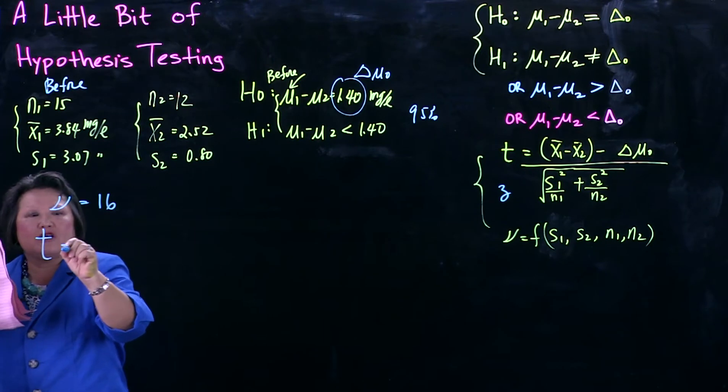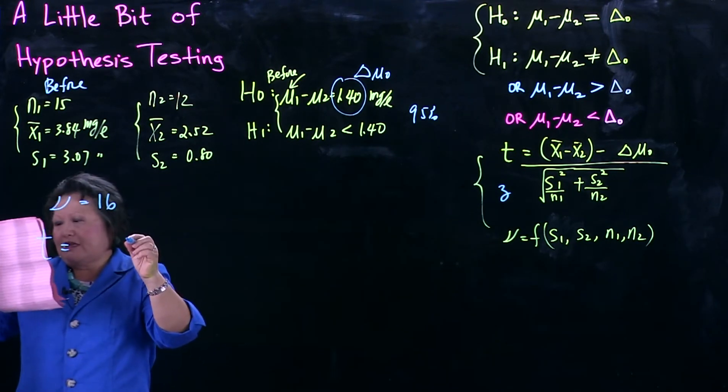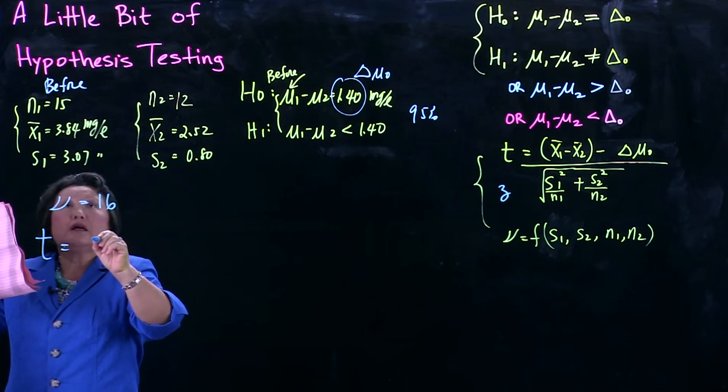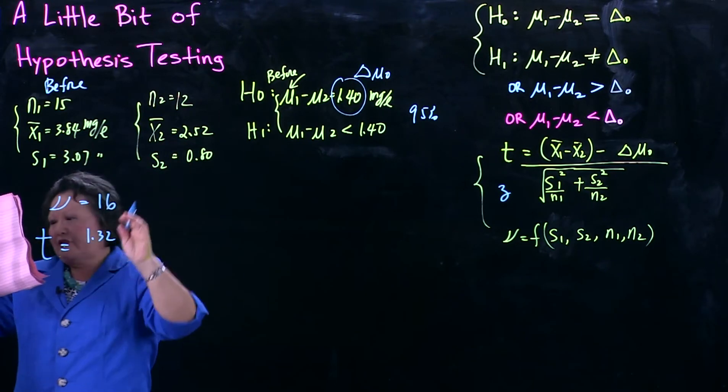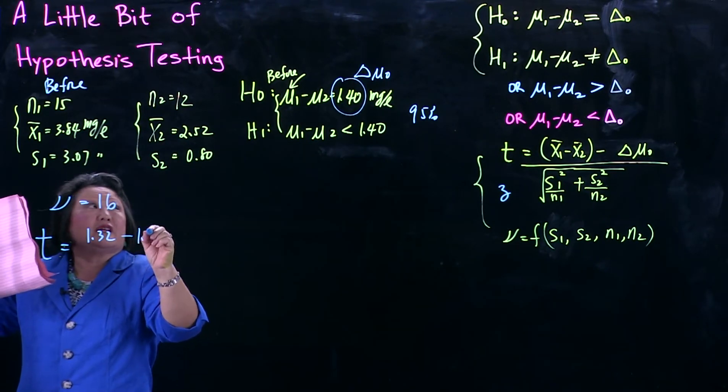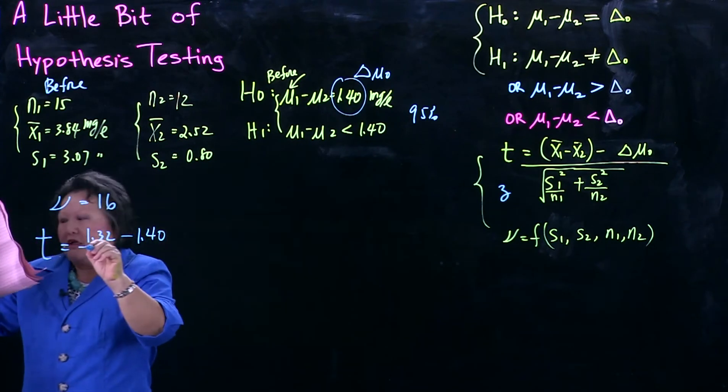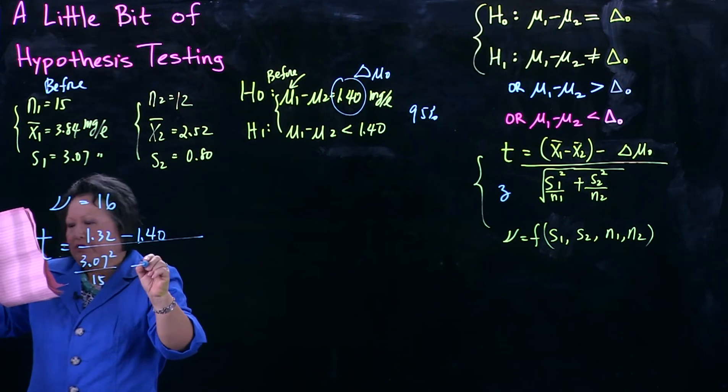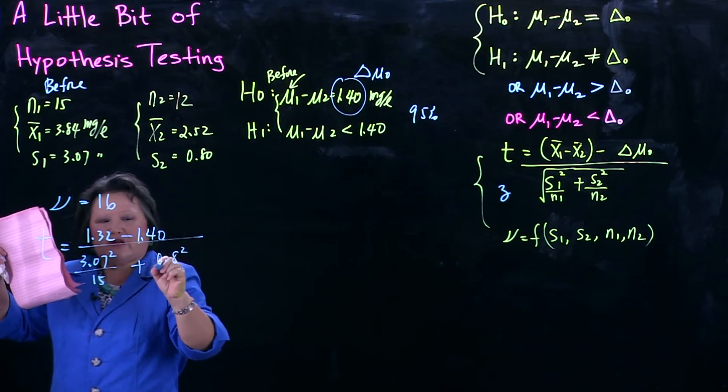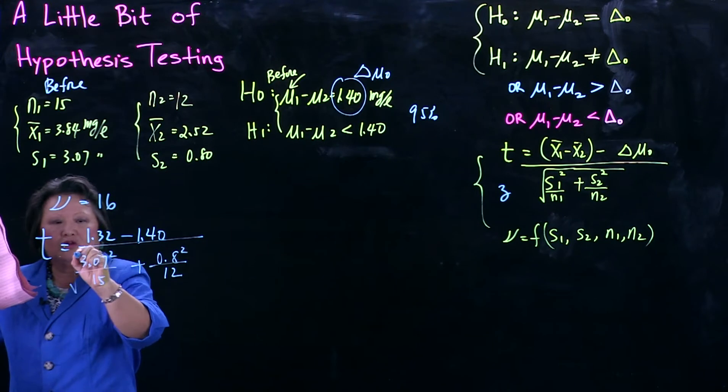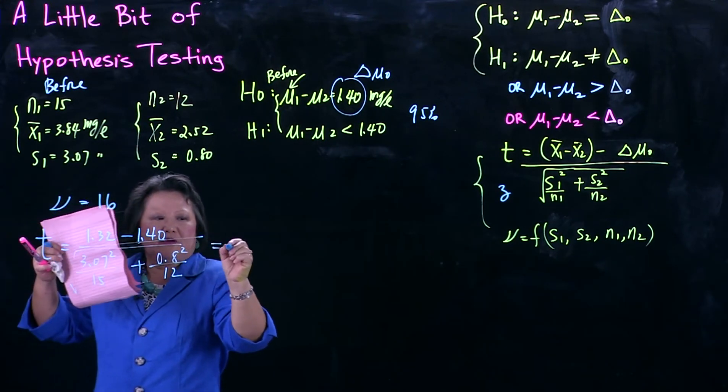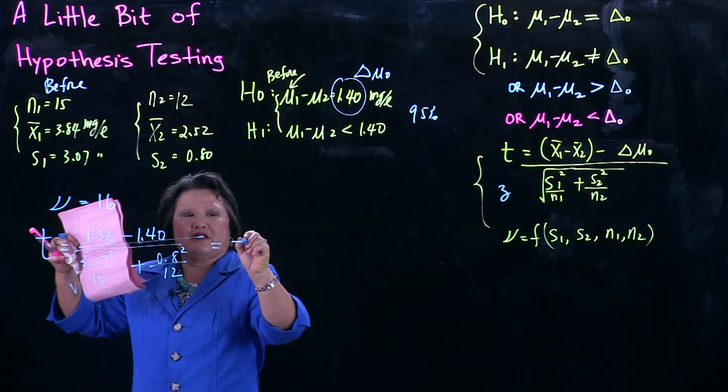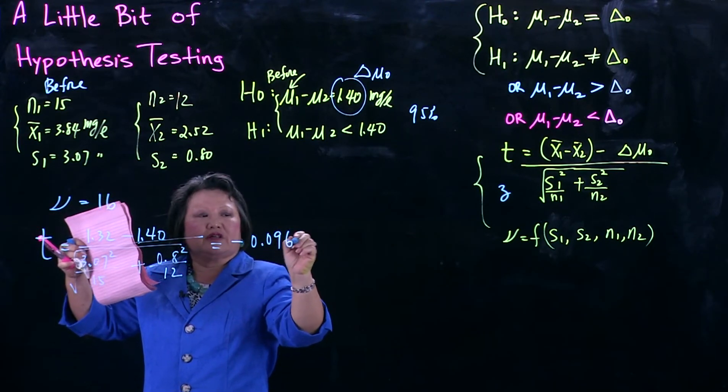You compute this t according to that formula, which I won't write down again. But I will just write down this as 1.32, that's this minus this, minus I want to test 1.40, that's this guy right here, divided by 3.07 squared divided by 15 plus 0.8 squared divided by 12, and the square root over this whole thing. You compute that and you'd get minus 0.0969. Notice the minus. Why minus? Because this number, which is the difference of x1 bar and x2 bar, is actually less than this. I'm ambitious. I want to see if I should reduce more.